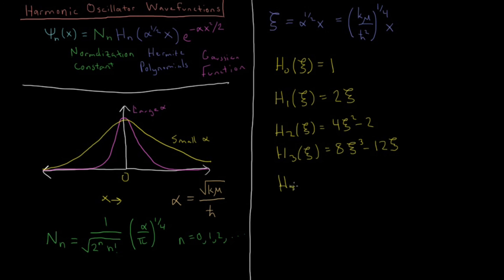There is a function for how you can generate these. I'm not going to mention it now, but if you look up Hermite polynomials, you can see how you can generate these given some starting formula.